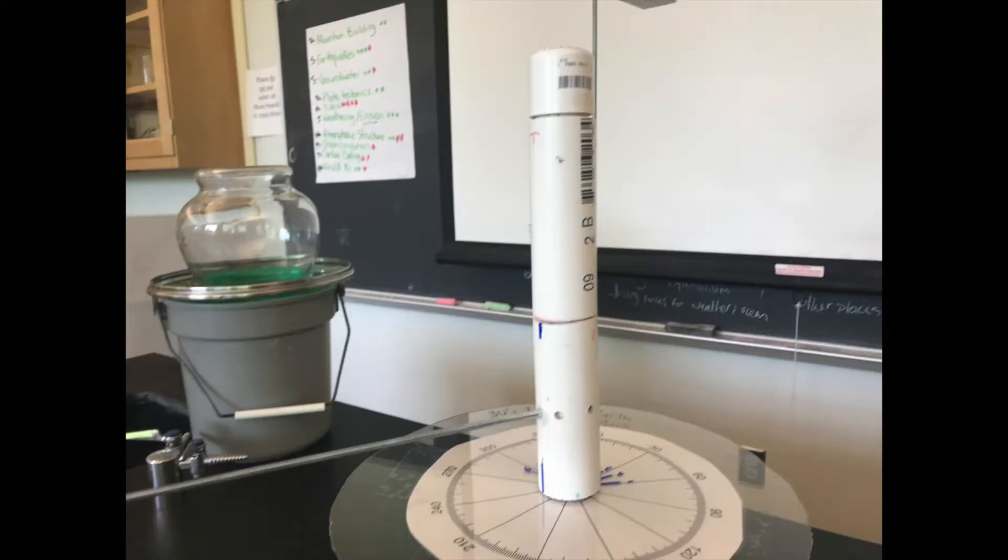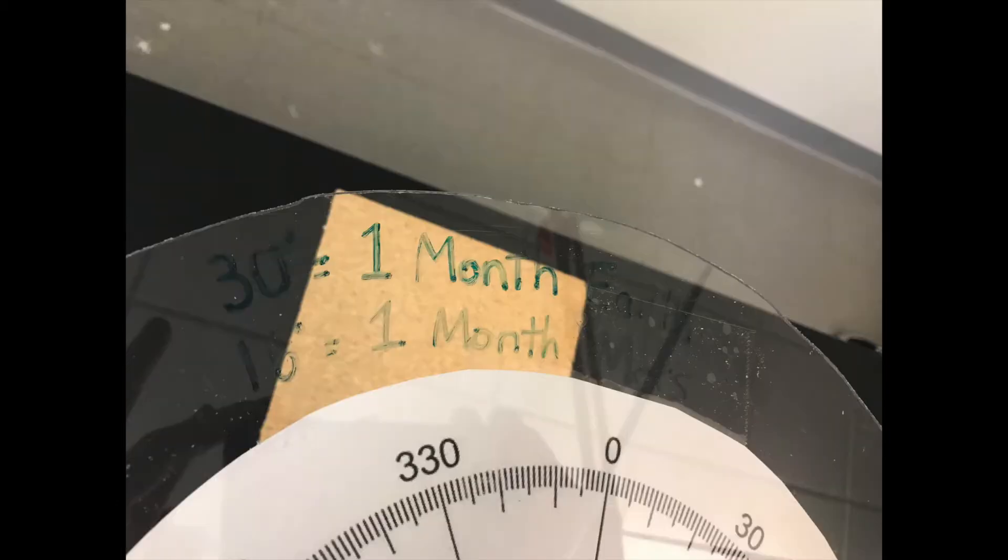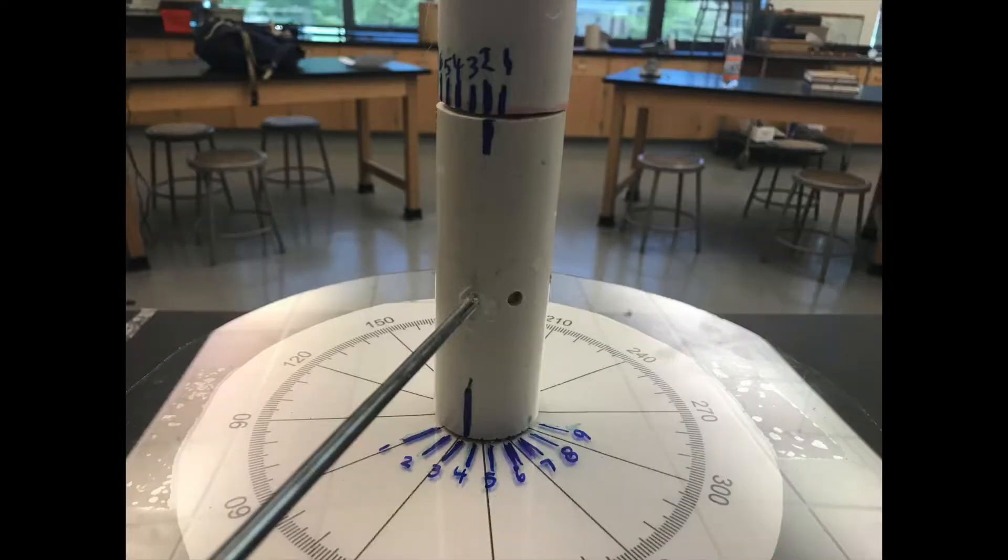Before we placed the spinning pipes onto the stand, we cut out a round plexiglass sheet and taped a printed circle with degree marks on it. We then marked off how many degrees Earth and Mars revolved around the sun in one month. Earth was marked off for 30 degrees each month and Mars was marked off at 16 degrees.